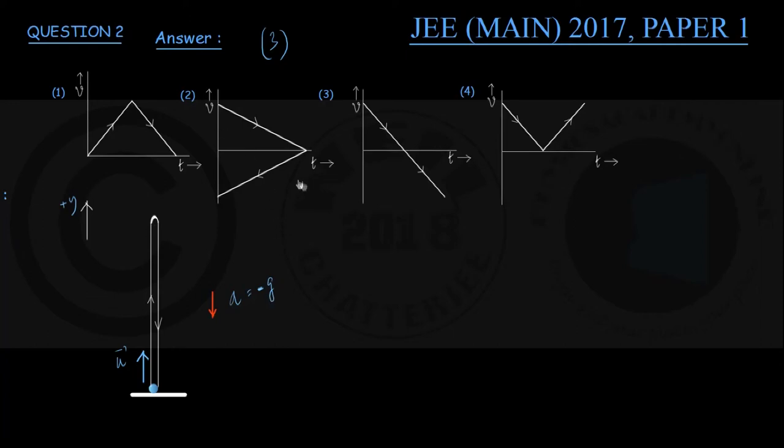Now in a graph of v versus t, you know that the slope of the graph, that represents dv/dt, the rate of change of velocity in time, is nothing but acceleration.